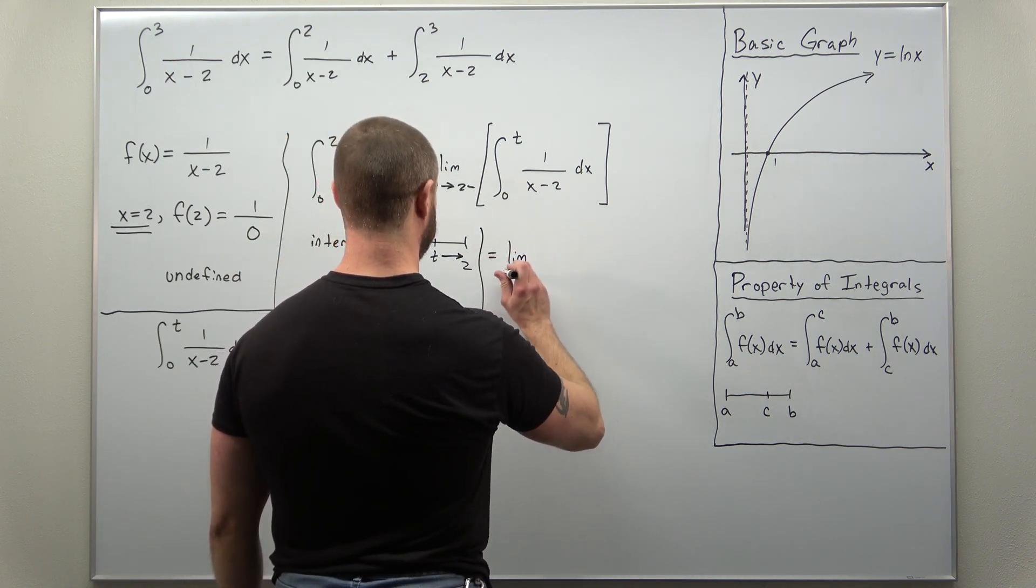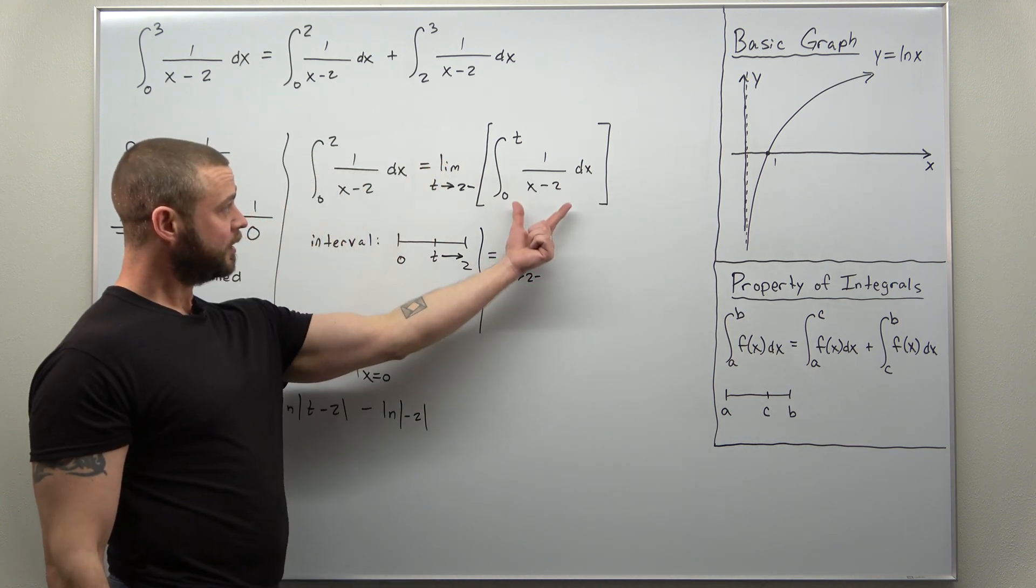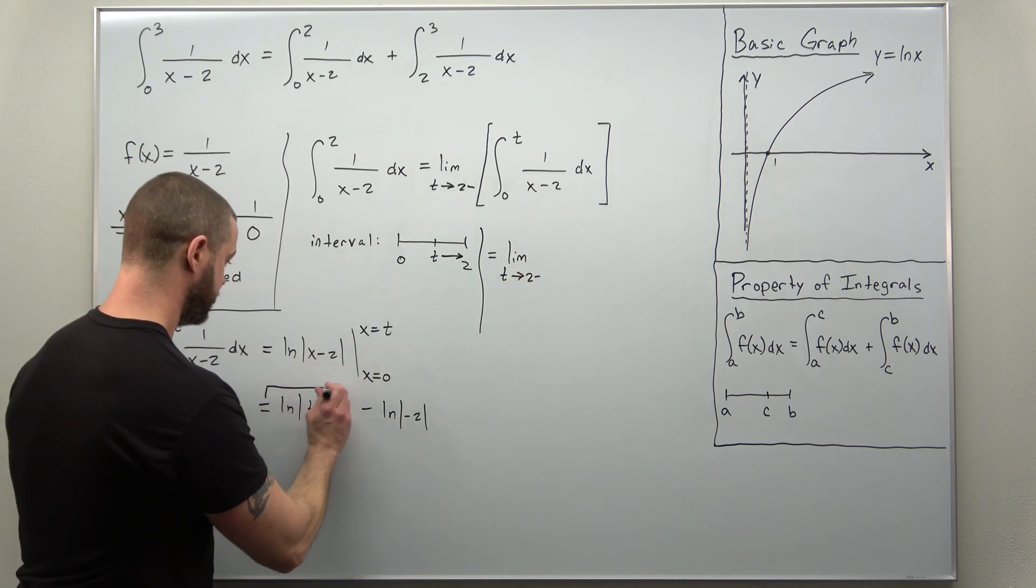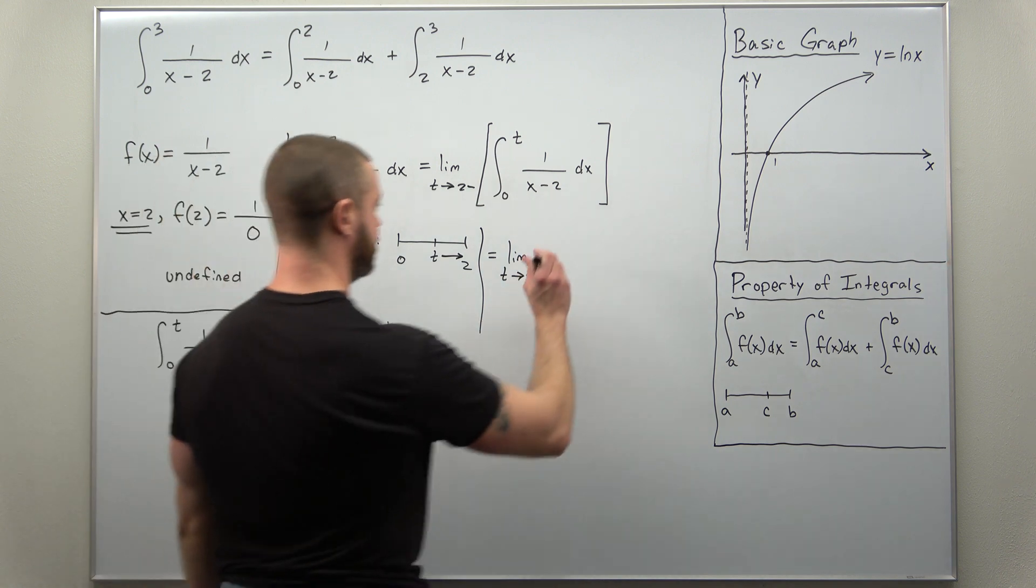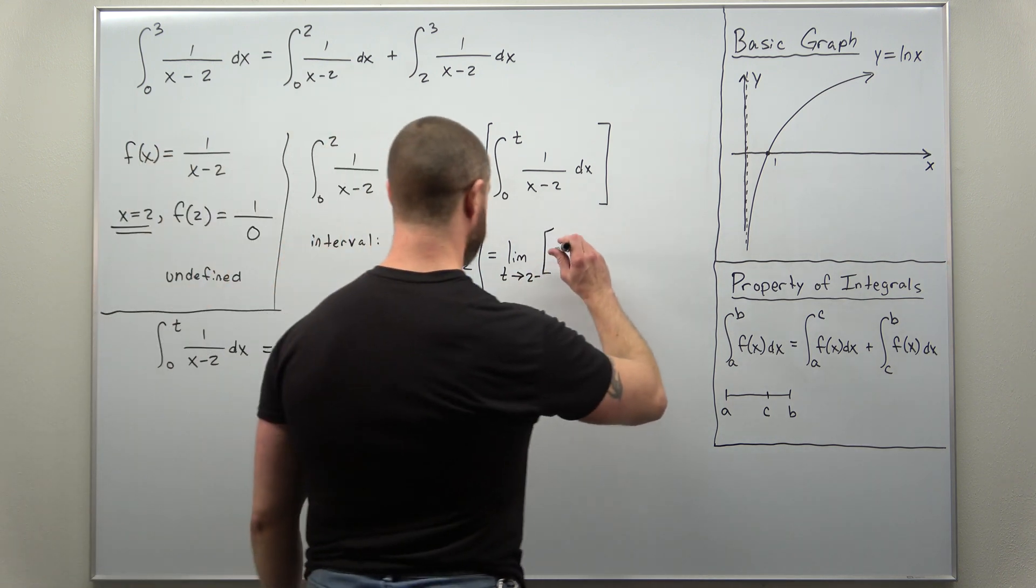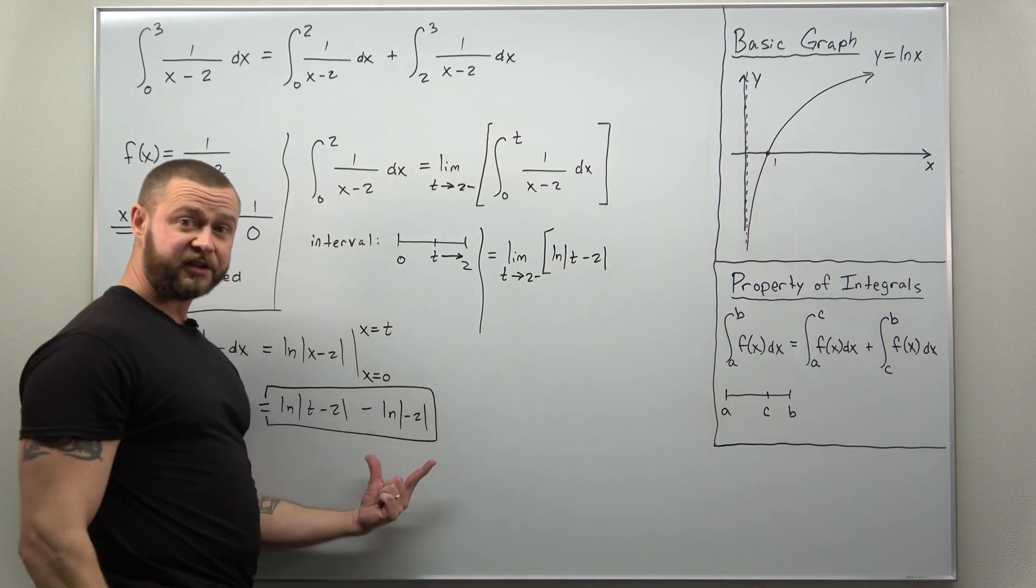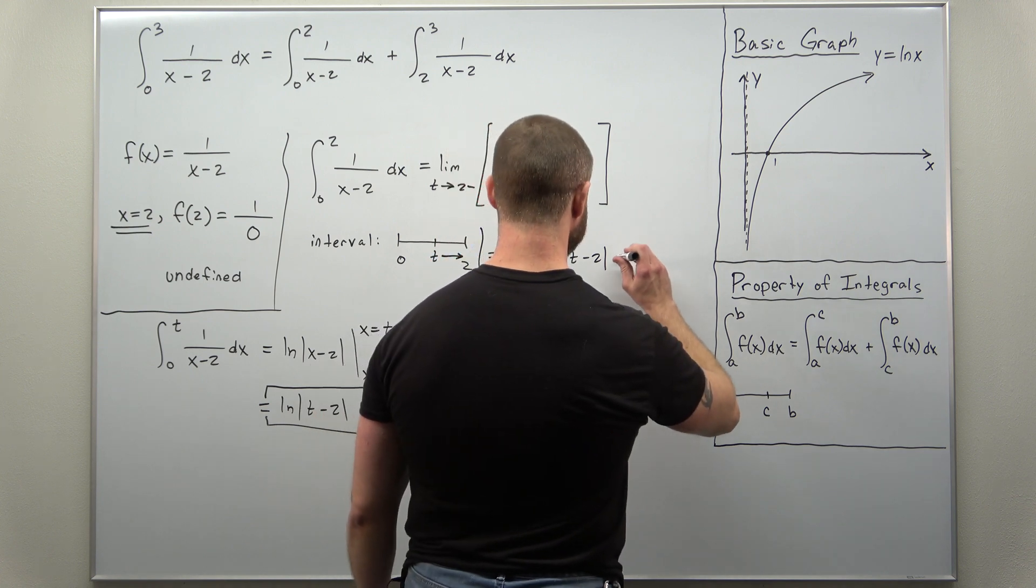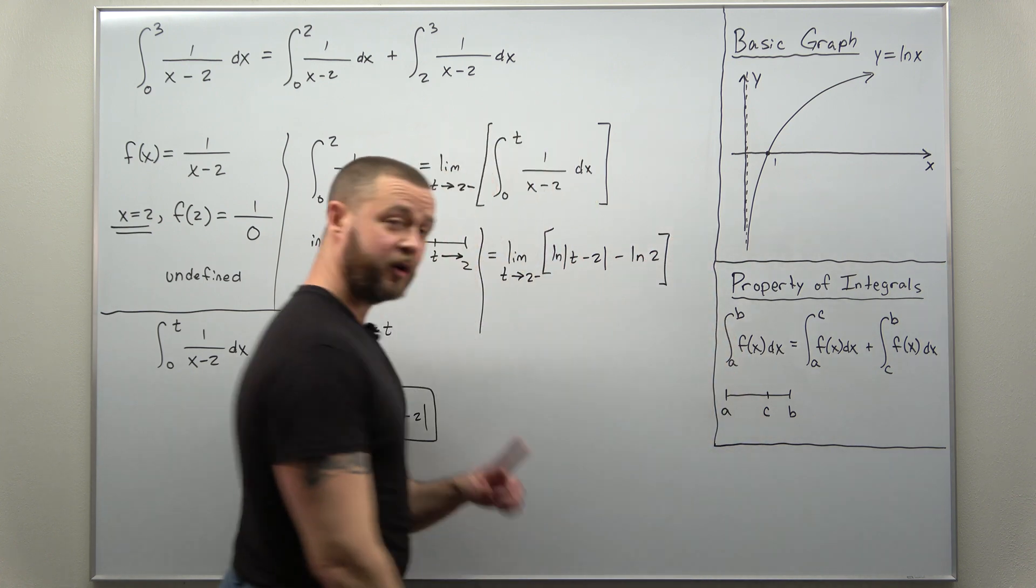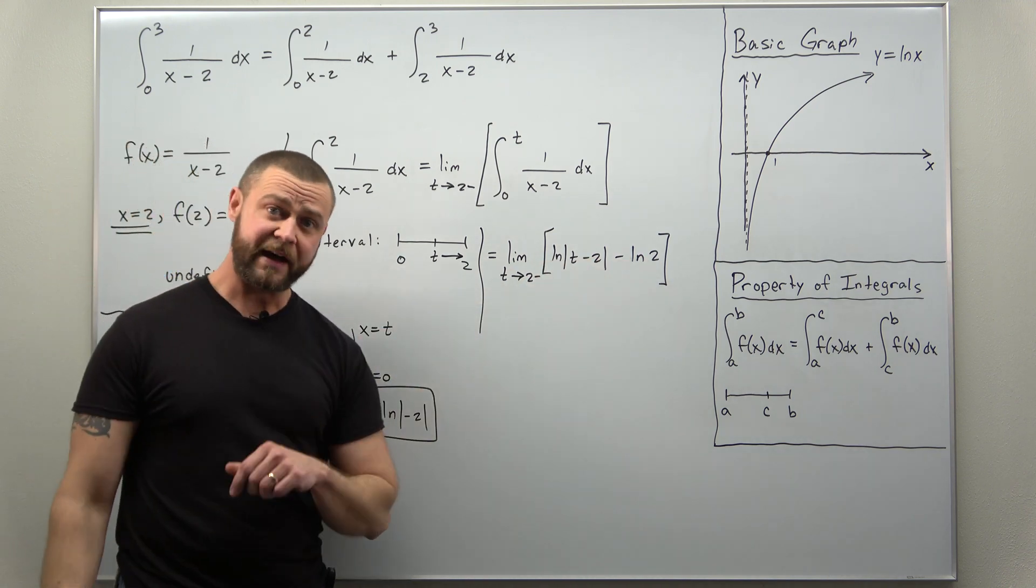So let's go ahead and plug that in. We're now going to take the limit as t approaches 2 from the left of the value of our integral, which is this natural log of t minus 2 minus natural log of 2. The absolute value of negative 2 becomes 2, so you can replace that here.